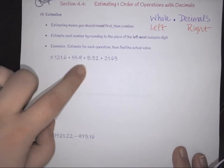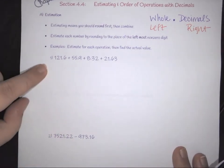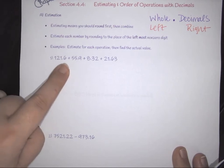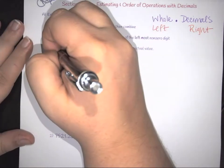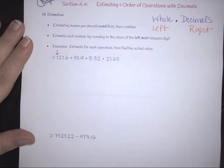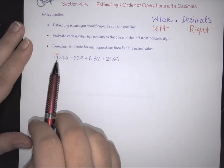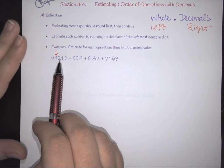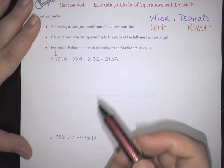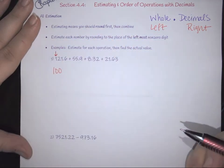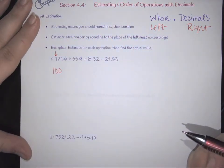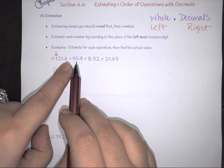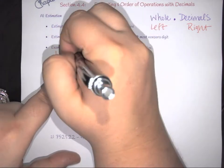Let me show you how that works. Looking at the first number, 121.6, the leftmost digit is the 1. To round, we look at the 2 next to it. Since 2 is less than 5, the whole digit rounds down, and 121.6 becomes 100.